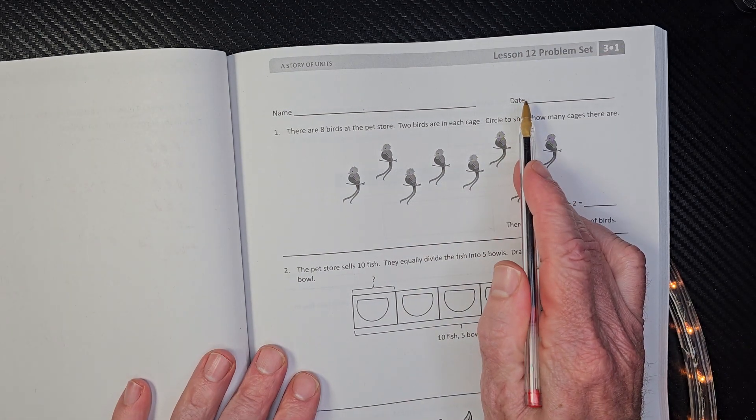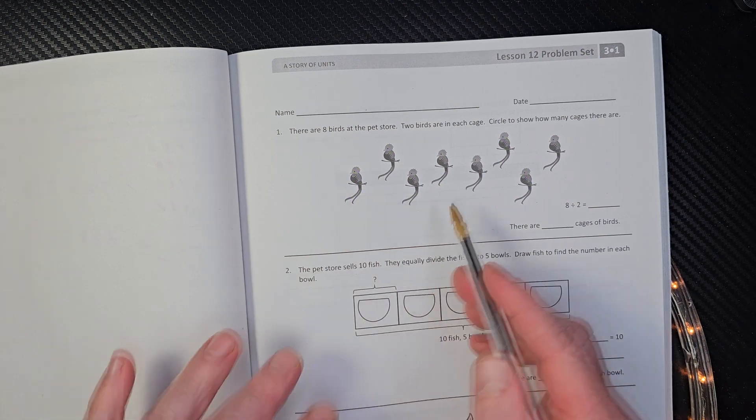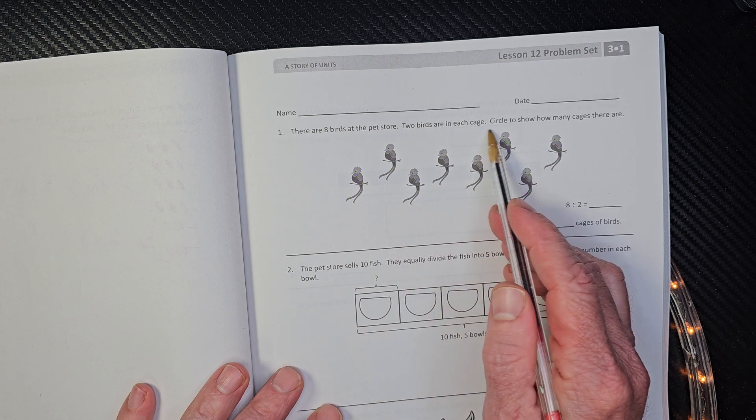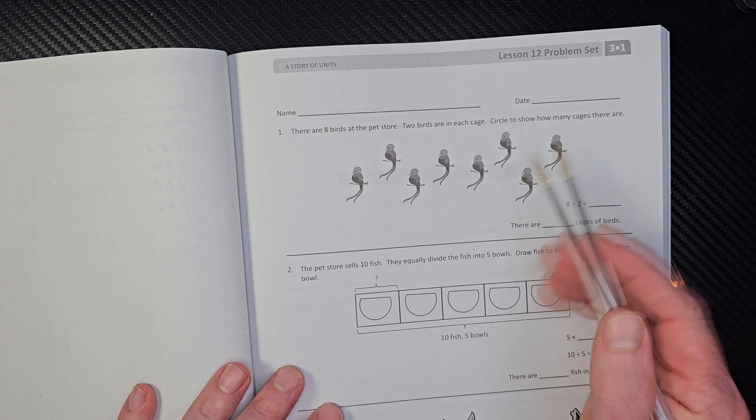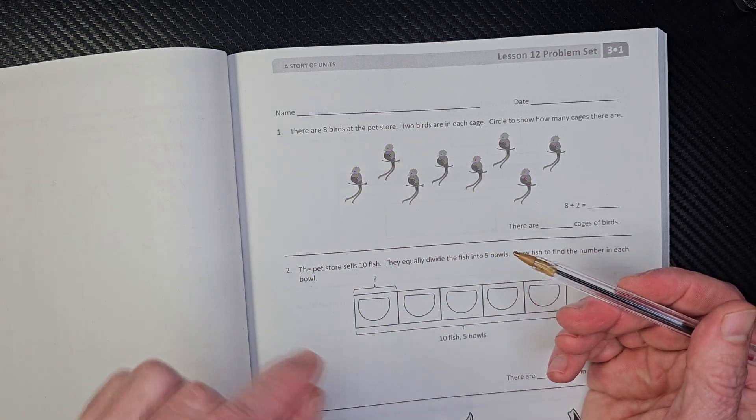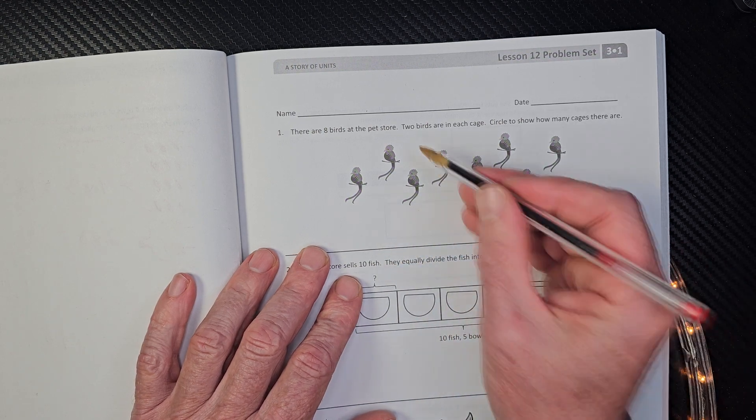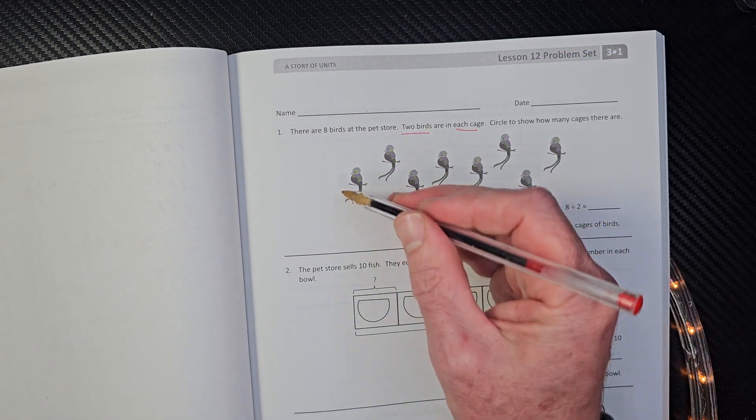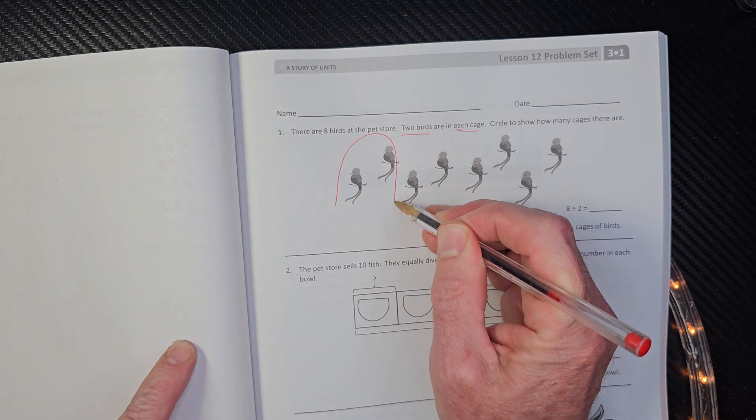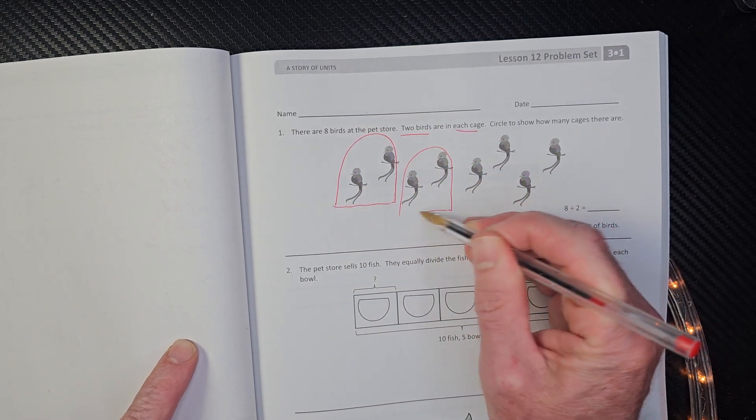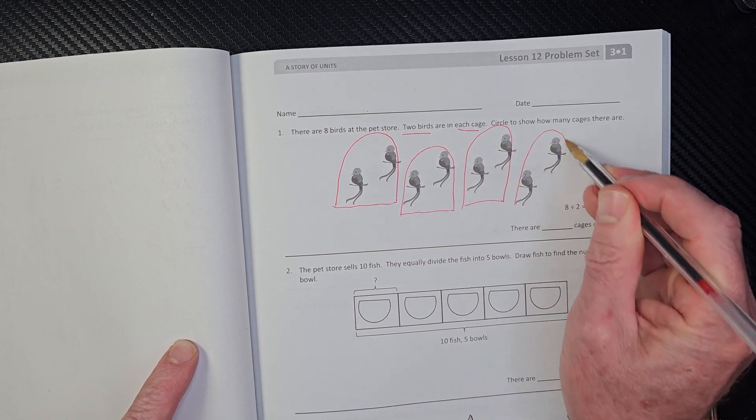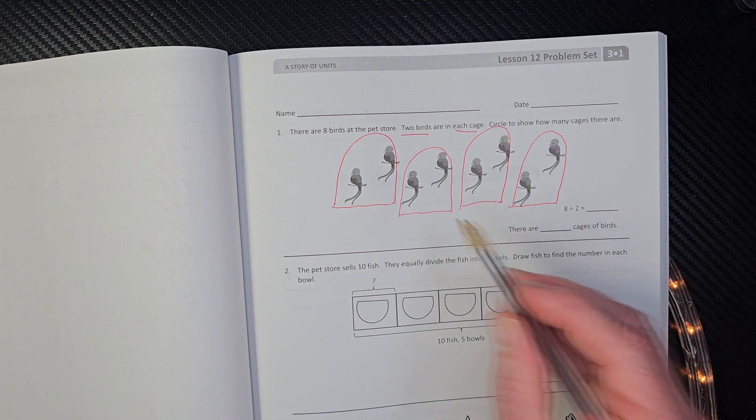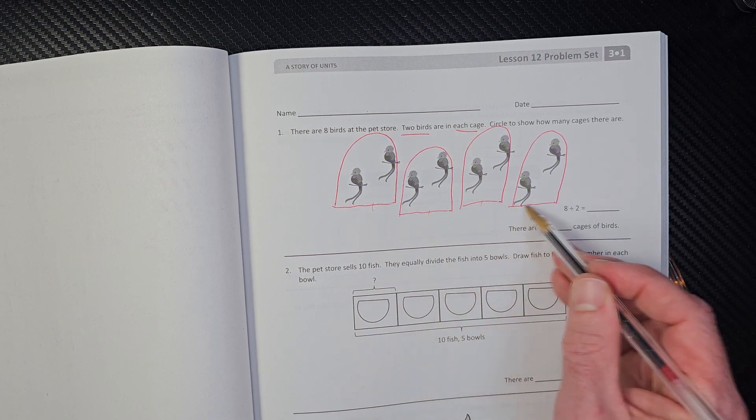Let's go on to our next page here. Lesson 12 problem set. This looks kind of fun. There are eight birds at the pet store. Two birds are in each cage. Circle to show how many cages there are. Well, I don't see any cages. They're all flying everywhere. We need to put them in a cage, don't we? How many birds do we need to put in each cage? Two birds we need to put in each cage. So let's go ahead and do that. We're going to put these two in a cage, and put these two in a cage, these two over here in a cage, and these in a cage.